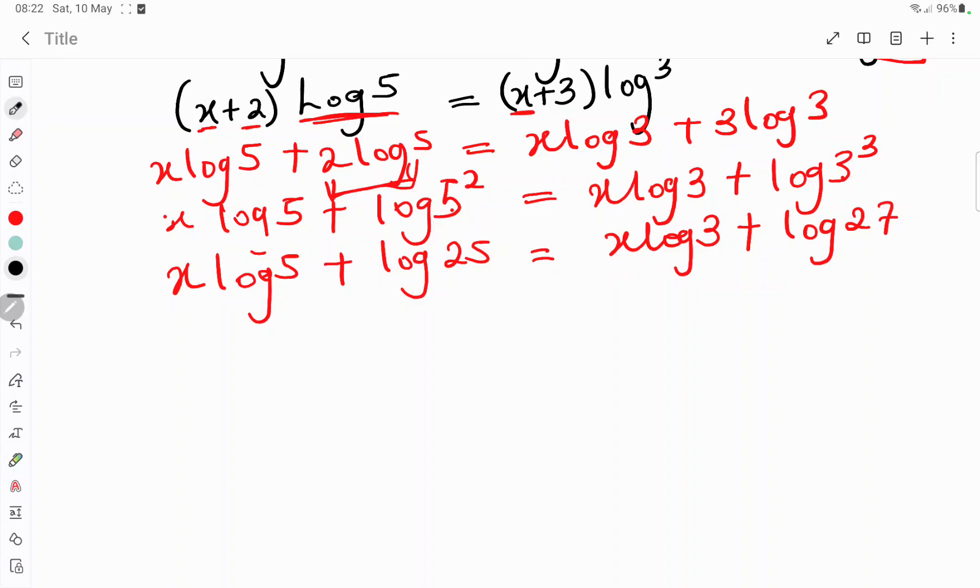Then the next thing we do is to collect like terms. Bring in the one that has x together. This has x and this has x, collection of like terms. So we have it as x log 5 minus x log 3, because this log 3 is crossing the equality sign. And it is equals to log 27 minus this particular log 25 crosses the equality sign. You have it as log 25.